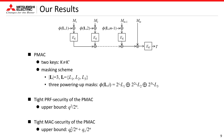This slide shows our results, which solve the open problems. We consider 2-key PMAC with a masking scheme using 3 powering-up masks with 3 secrets L1, L2, L3, where the finalization key is distinct from the block cipher key in PHASH. For this PMAC, we show that it has a tight security bound for both PRF security and MAC security. Hereafter, I explain an outline of the proof of the PRF security.